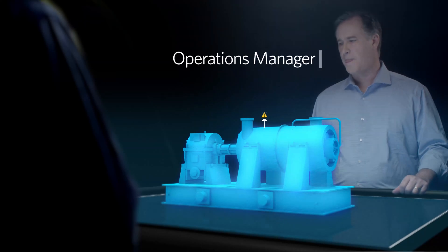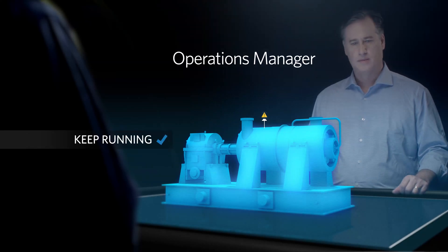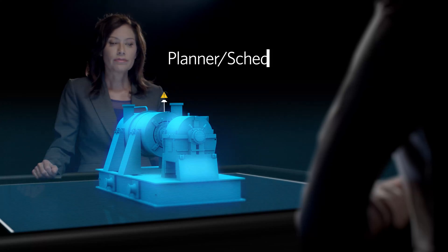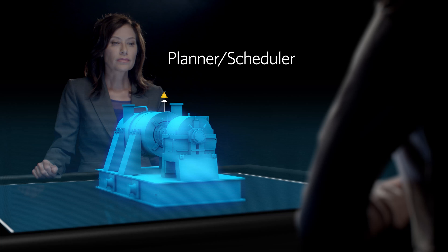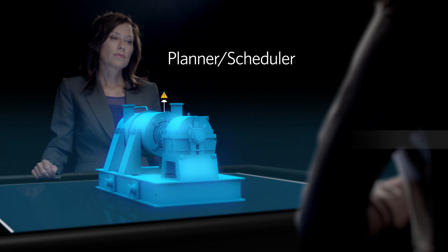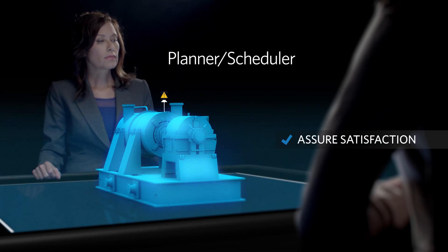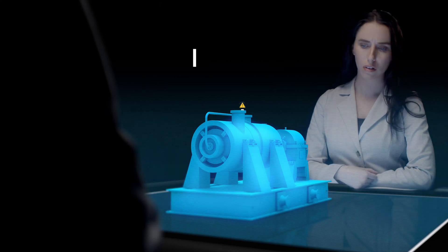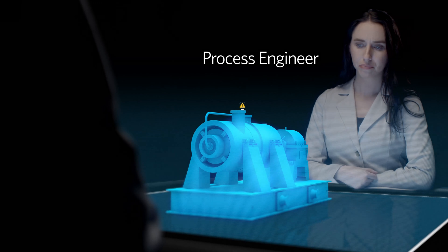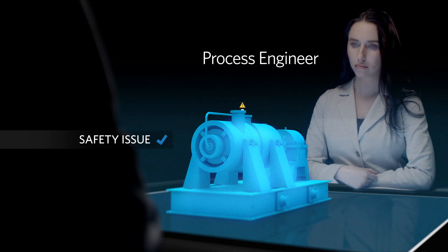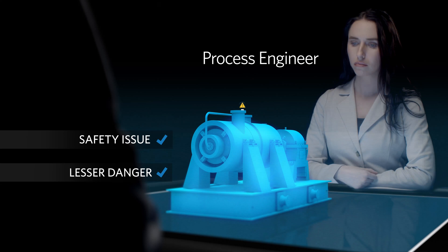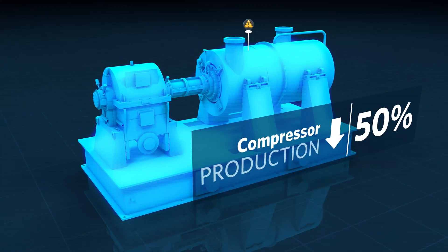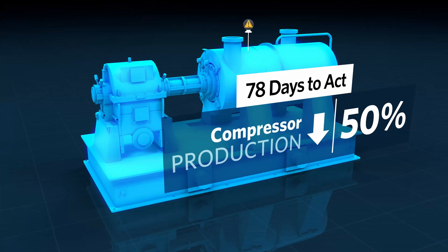Operations is aware, wishes to maintain production, and is resistant to shutdown until necessary. Planning and scheduling seeks to assure timely product deliveries to assure customer satisfaction and maybe to avoid demurrage costs from delayed shipments. Reliability staff question trade-offs. Is it an emergency safety issue or a lesser danger where, for example, lightening the load on the compressor allows it to survive until a more convenient time for maintenance?